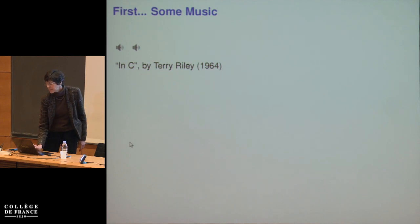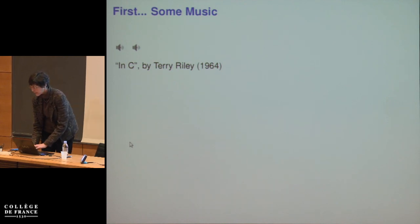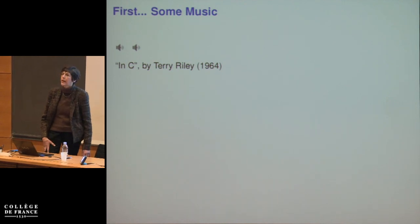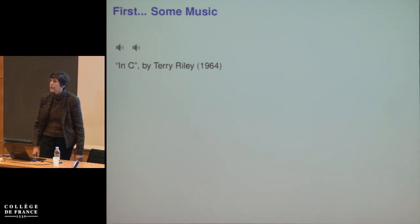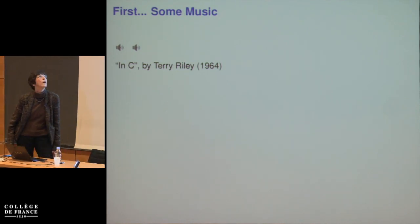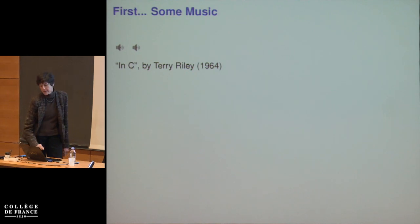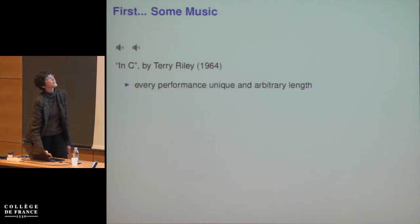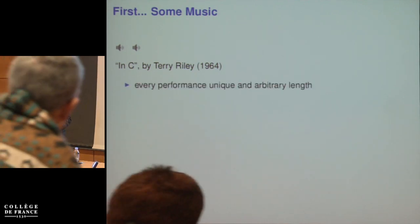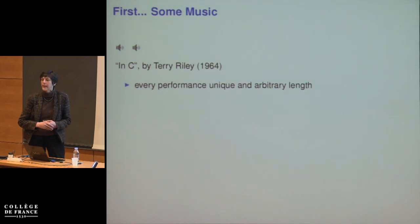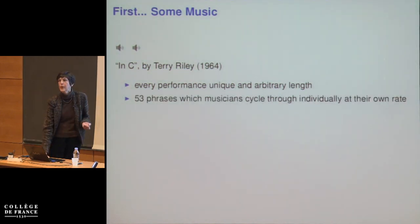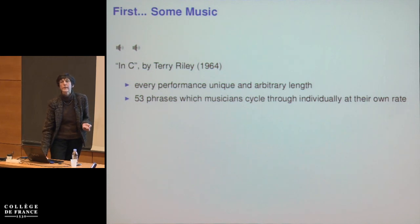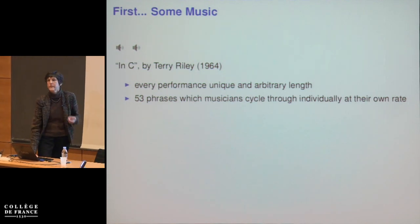What I'm going to play for you is a bit of 'In C' by a composer named Terry Riley. This piece was composed in 1964, and it's a significant piece because every performance of it is unique and of arbitrary length. That's because the piece is composed of 53 phrases, which the musicians cycle through at their own rate.